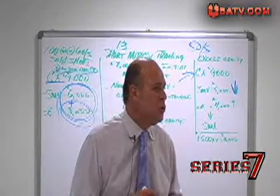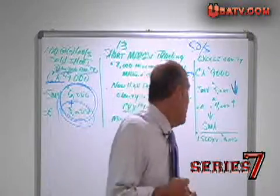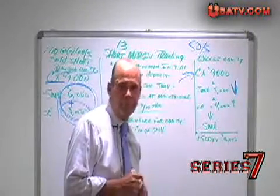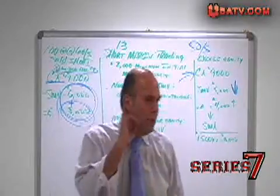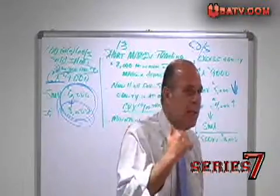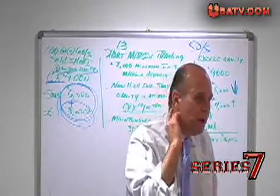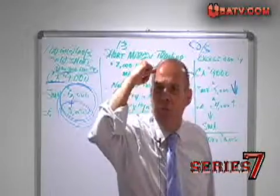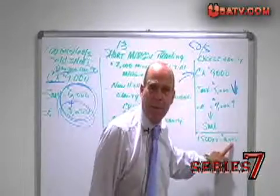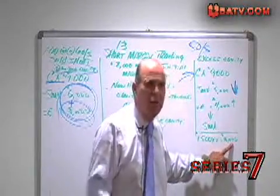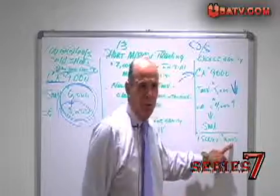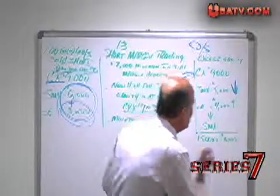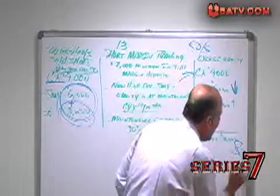Credit the $1,500 to the SMA account. Multiply it times two and you have $3,000 — not buying power, short selling power. You're on the short side. Watch your language. It's short selling power: the ability for your client to short $3,000 worth of new stock.